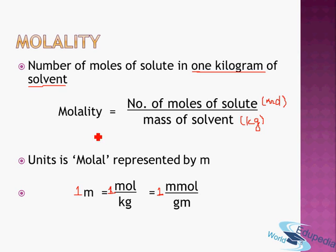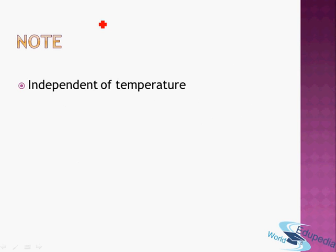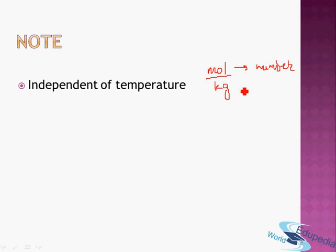Now let's note some important points about molality. Molality is independent of temperature. This is because molality is moles of solute divided by mass of solvent. Moles represent a number of entities, and kilograms represent mass — neither quantity is affected by temperature. Therefore, their ratio is also unaffected by temperature, which is why molality is temperature-independent.